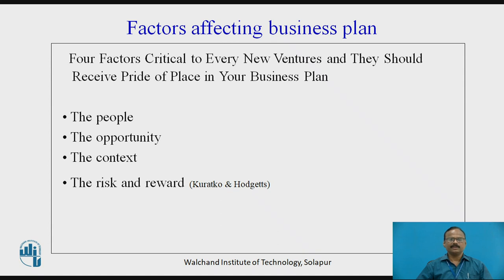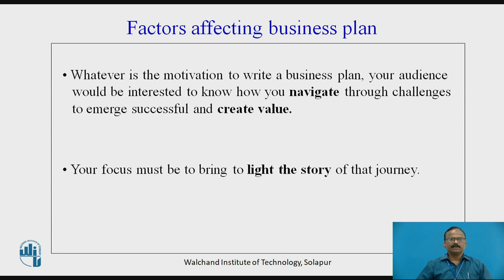Context: It is the present industry scenario. It gives a big picture — the present business scenario with particular reference to the opportunity, and the growth prospect of the market segment along with the market structure. Risk and Reward: The whole presentation is around risk and reward — things that can go wrong and the potential gain if the team can do things right. Whatever the motivation to write a business plan, your audience will be interested to know how you navigate through challenges to emerge successful and create value. Your focus must be to bring to light the story of that journey.